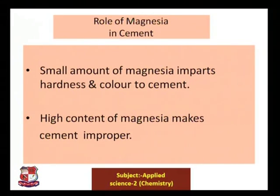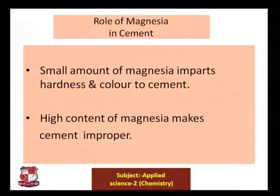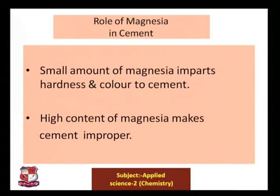A small amount of magnesia imparts hardness and color to the cement. However, if very high content of magnesia is added, the cement will not form properly — its setting time, color, and other properties will be adversely affected. Therefore, high content of magnesia may make the cement improper.